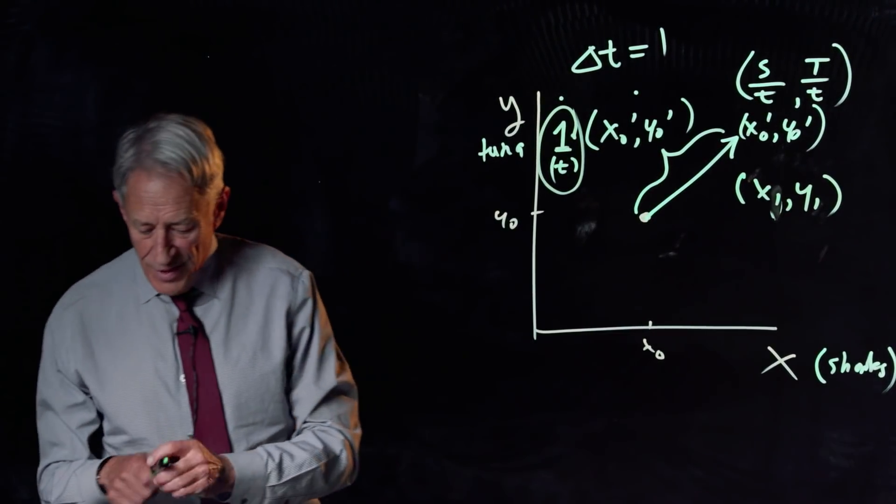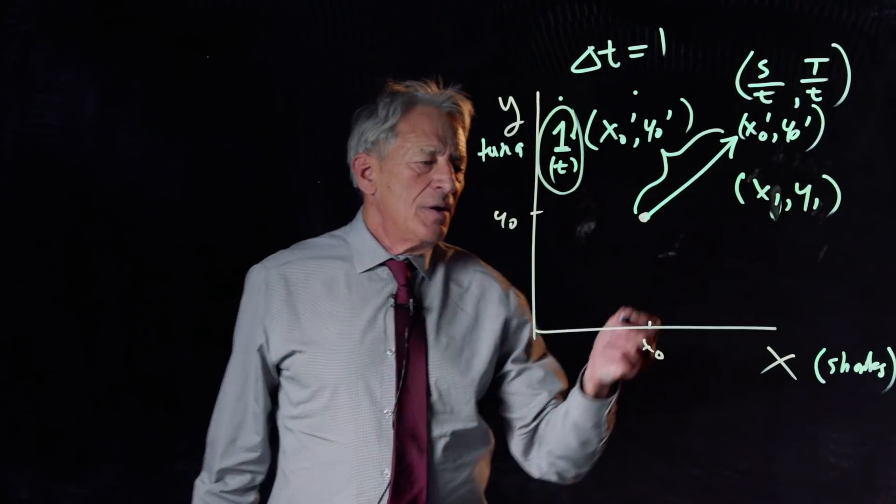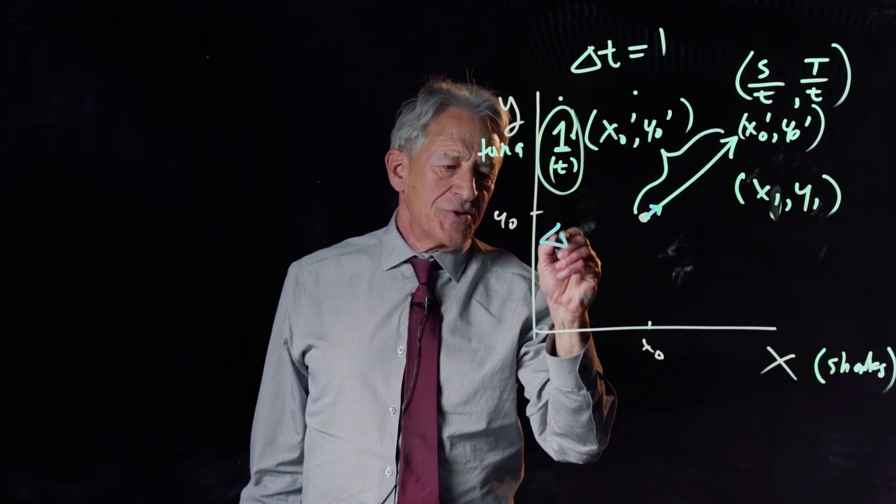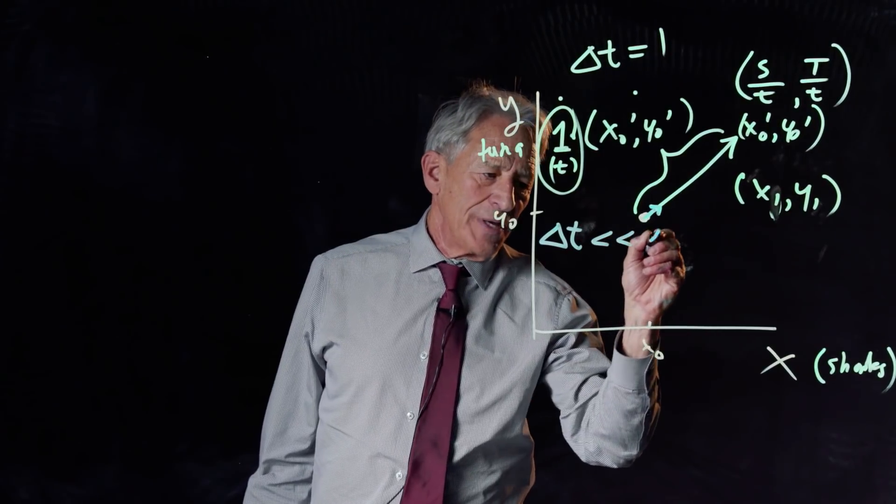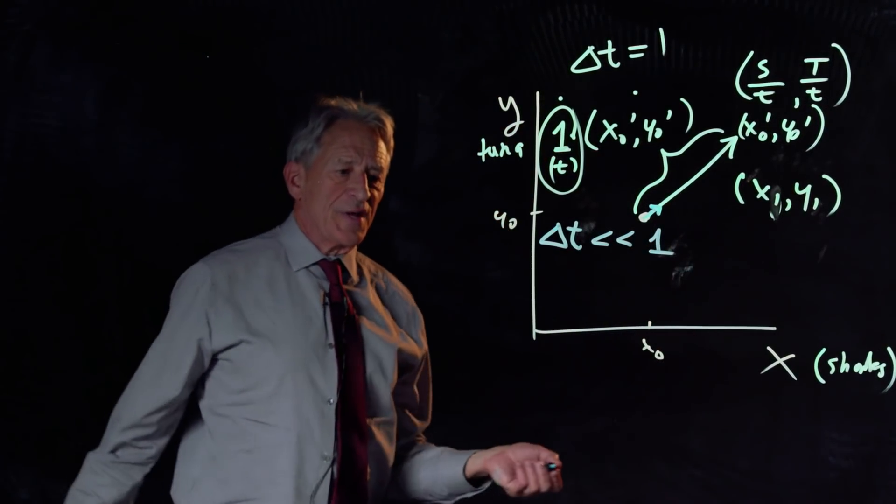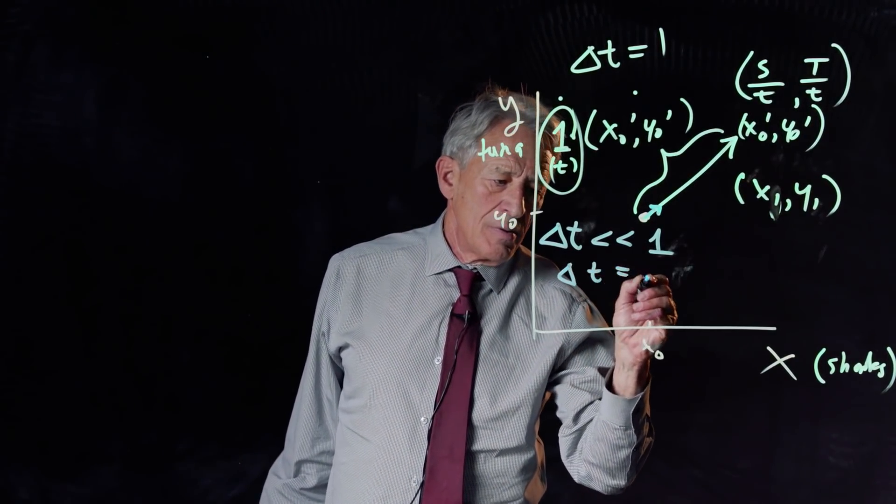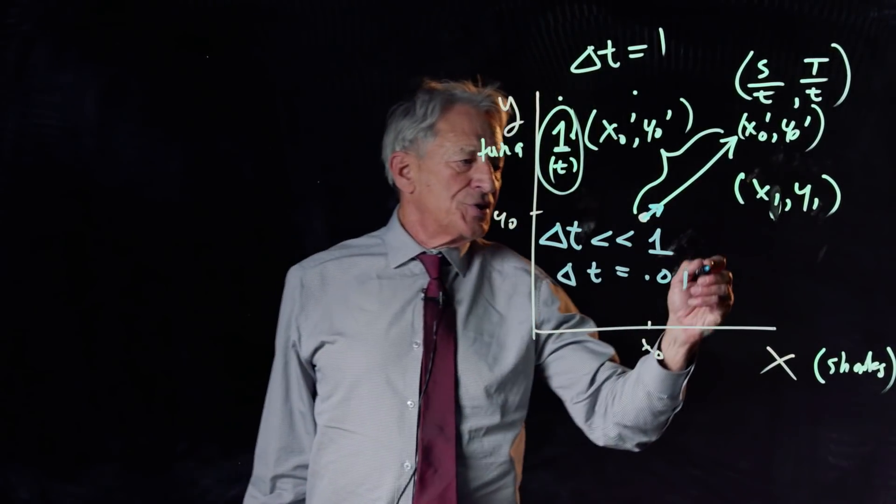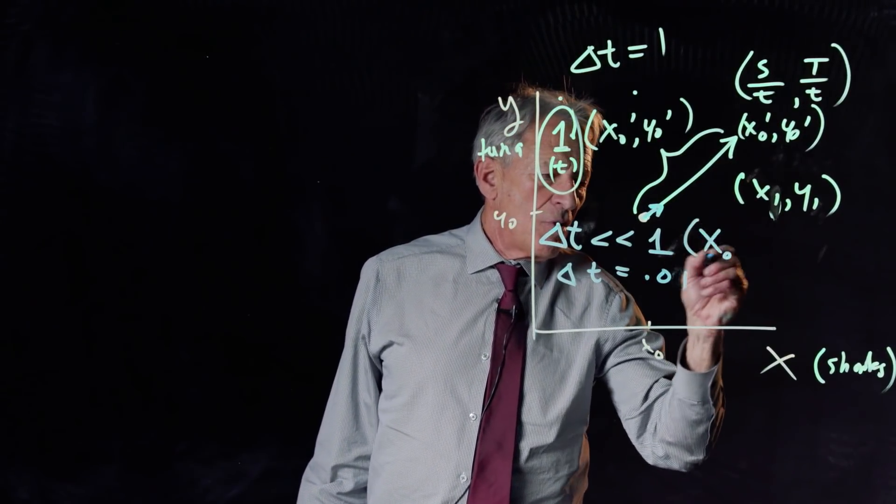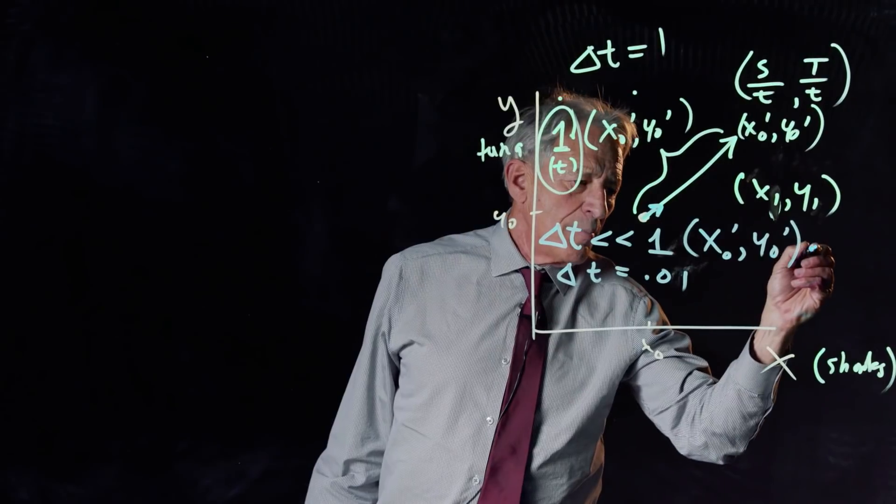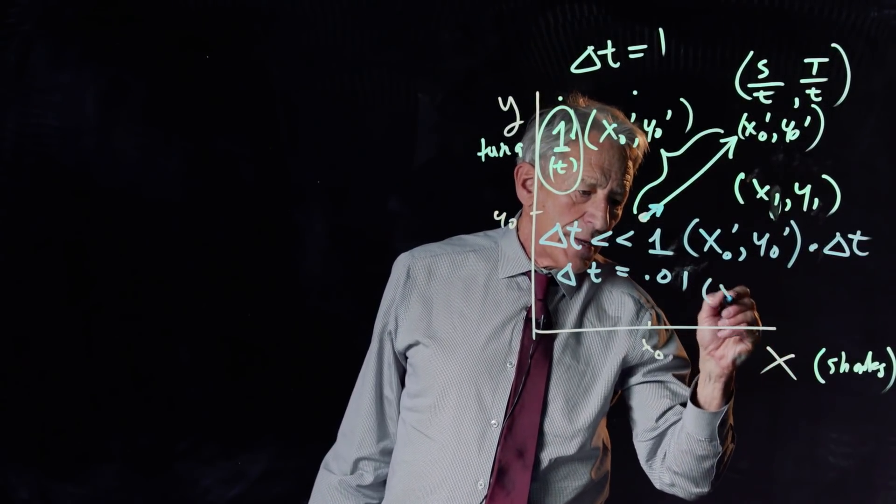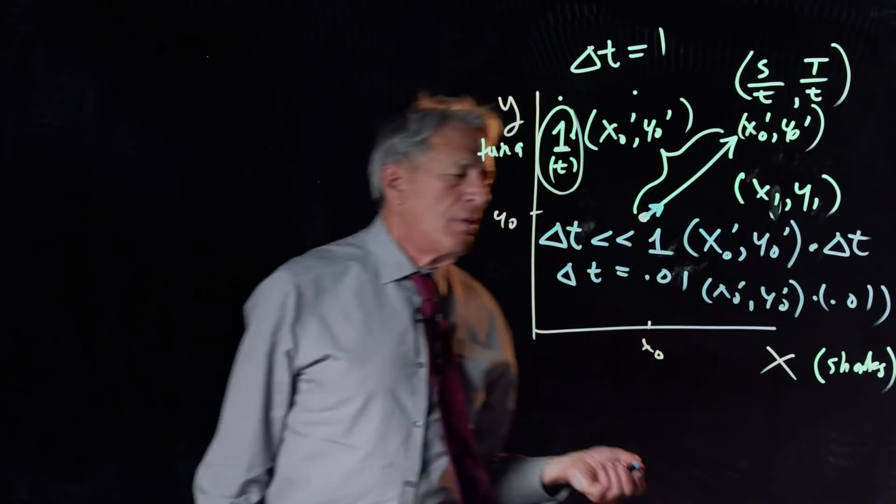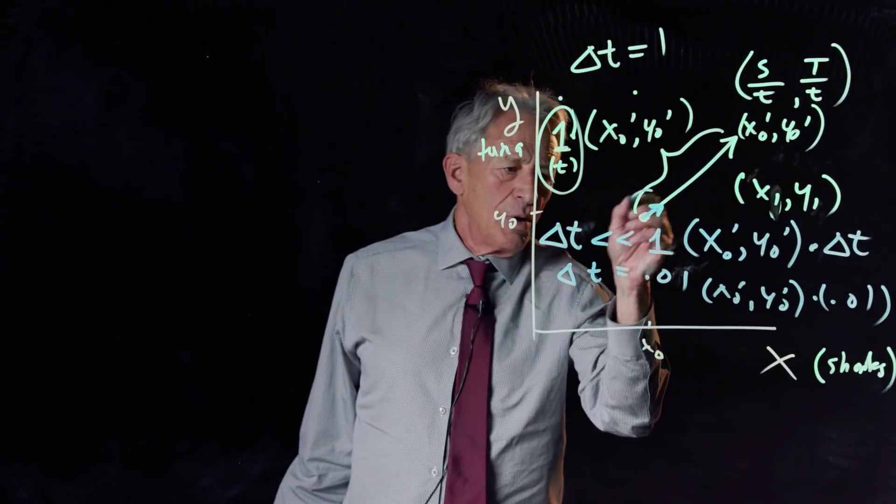But we're not going to do that, we said. Instead, we're going to follow the change arrow for a very short time, which amounts to saying delta t much less than 1. Let's say it's 0.01 in this case. And so our new change vector here is the change vector x0 prime, y0 prime, times delta t, or x0 prime, y0 prime, times 0.01. And that is that little blue arrow right here.